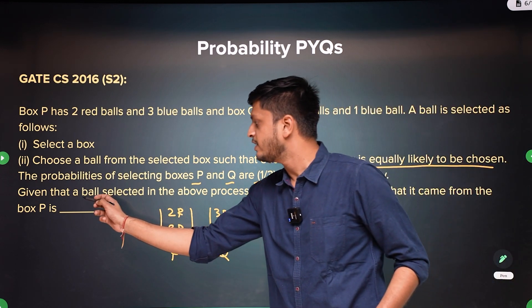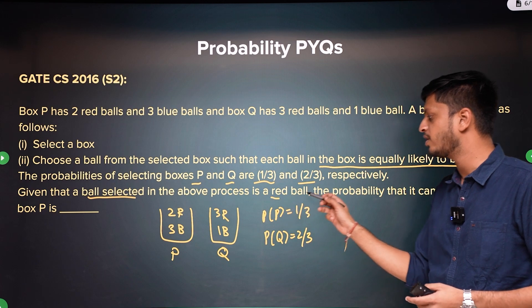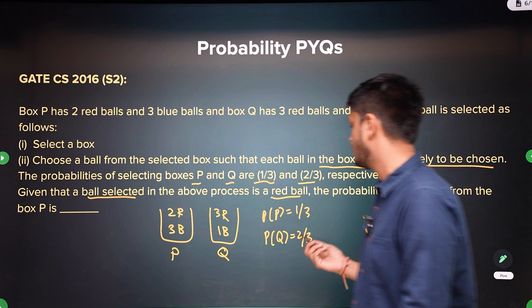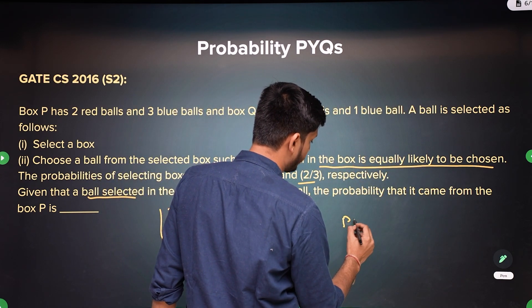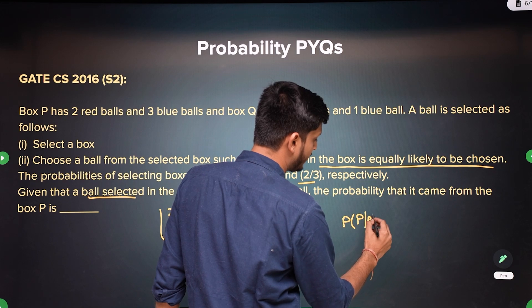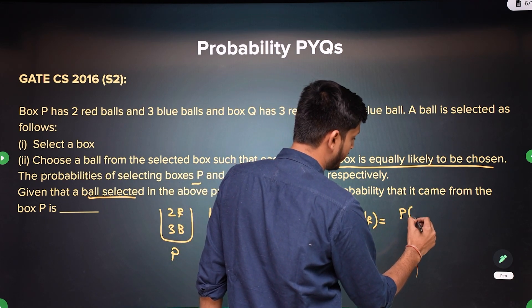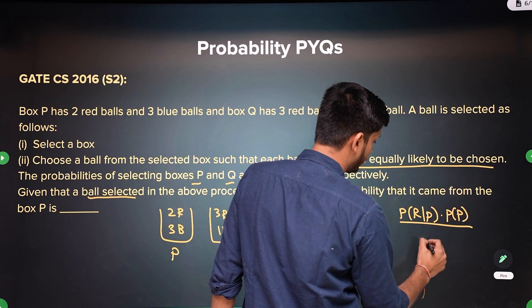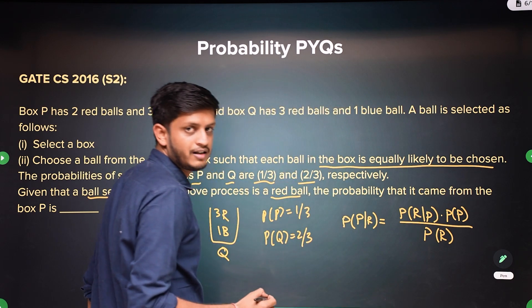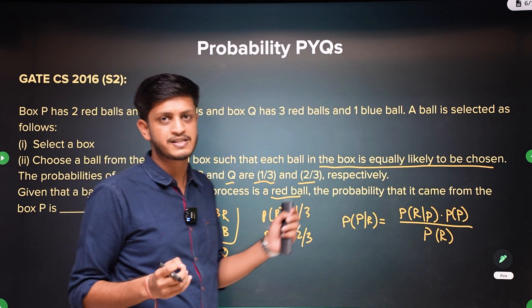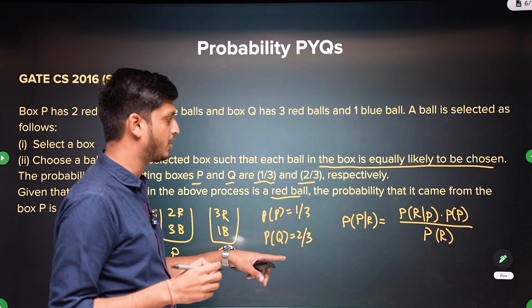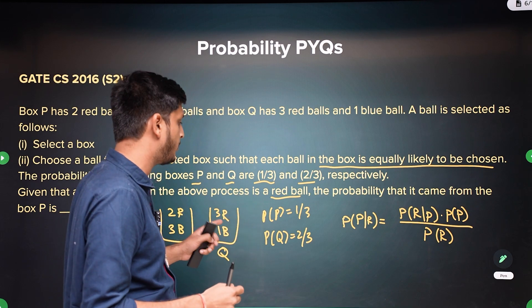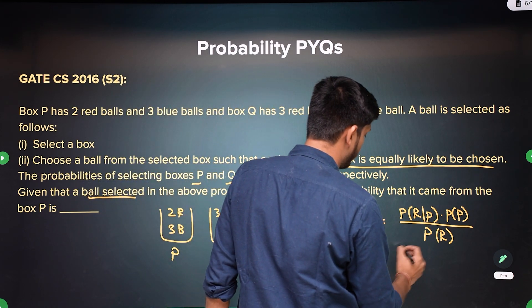Given that the ball selected is a red ball, what is the probability that it came from box P? We want to find the probability that it came from box P given that the red ball is chosen. It is the probability of getting a red ball from box P, times the probability of choosing box P, upon the overall total probability of getting a red ball. This is obviously Bayes theorem — it's a reverse engineering problem.